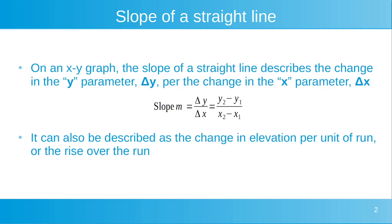To talk about the slope of a straight line: on an xy graph, the slope of a straight line describes the change in the y parameter, delta y, per the change in the x parameter, delta x. So our slope, represented by variable m, is equal to delta y divided by delta x. If we've got two points — the first point x1, y1, and the second point x2, y2 — then delta y divided by delta x is equal to y2 minus y1 over x2 minus x1, allowing us to calculate the slope of a straight line from the values of two points on that line.